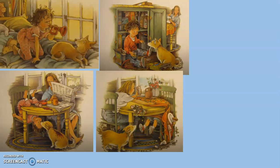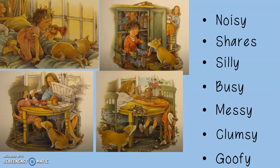So we know this character, Harriet, had a lot going on. Looking at just these pictures, we can see she seems like she's pretty noisy in the story. I see also that she's sharing with her dog, so she shares. She's silly. She's definitely busy. She's messy. She's clumsy, which means she falls over and makes a mess. She's goofy. These are some things I noticed just looking at these pictures and listening to the story.